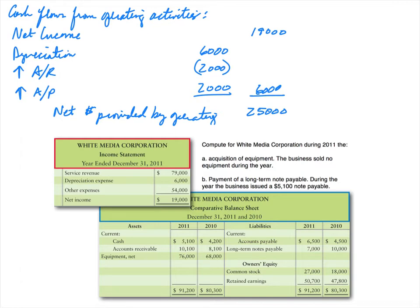Here is the first section of the statement of cash flows — the operating activity section. Under the indirect method we always start with net income, which we find on the income statement. Net income was $19,000. We adjust net income, which was calculated on the accrual basis — revenues recorded when earned, expenses recorded when incurred — to convert it to a cash basis. In the operating activity section we analyze current assets, current liabilities, depreciation, and gains and losses. Looking at the income statement we don't see any gains or losses, but we do see depreciation expense.